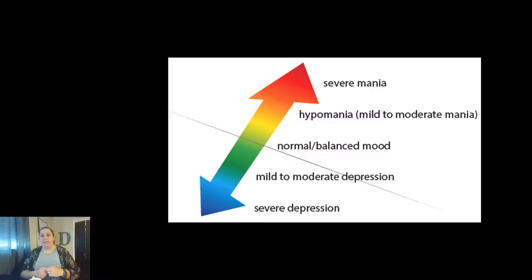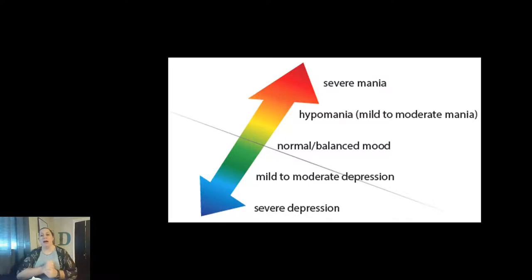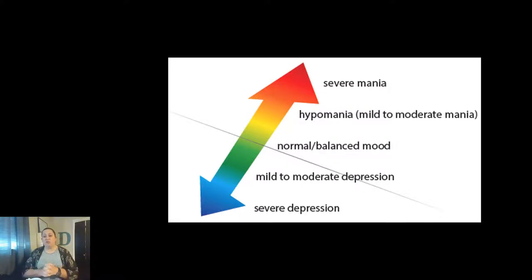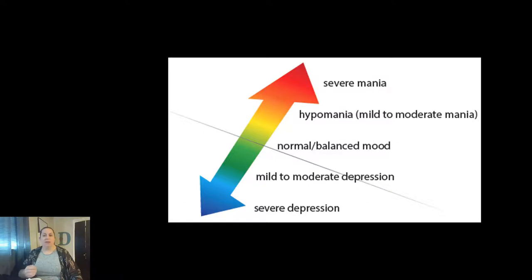Looking at the spectrum, we have our normal balanced mood in the middle. Going down, we have mild or moderate depression, and at the far end, more severe depression. Going up, we see what we call elation or happiness — first hypomania, which is mild or moderate mania, and then severe mania. So extreme depression is on one side and extreme elation or mania is on the other. In a disorder, the emotions are not appropriate for the event, or they last too long, or are very extreme in nature.